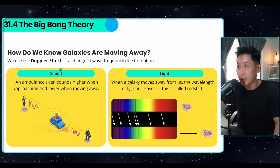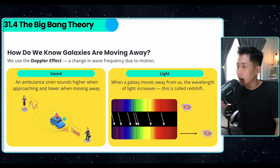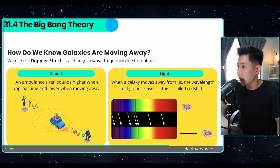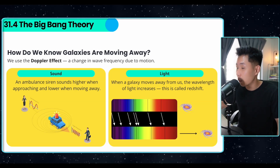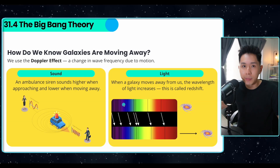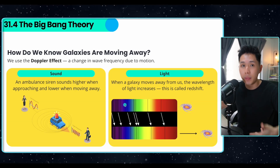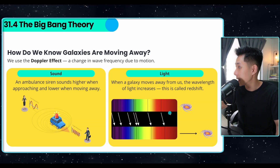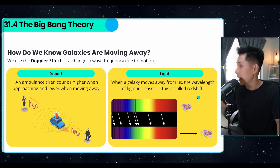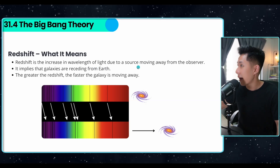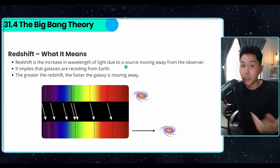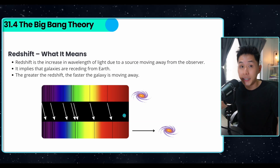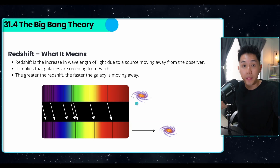But how do we know if an object is moving away from us? The answer is the Doppler effect — something we learn about when studying sound. Just as an ambulance sounds higher pitched when approaching and lower when moving away, when a galaxy moves away from us, the wavelength of its light increases. The term for this increase in wavelength of light is called red shifting. Red shift is the increase in wavelength of light due to a source moving away from us, explained by the Doppler effect. It implies that galaxies are receding, and the greater the red shift, the faster the galaxy is moving away.